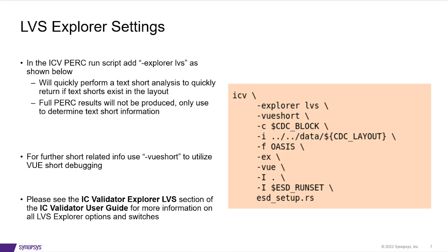To set up LVS Explorer, add Explorer LVS in your ICV PERC run script as shown. What this will do is quickly perform a text short analysis and return if text shorts exist in the layout. Full PERC results will not be produced, so this should only be used when determining text short information. For further information on the shorts, use View Short to utilize view short debugging, which we'll cover later in this video. Please see the IC Validator Explorer LVS section of the IC Validator User Guide for more information on available options.